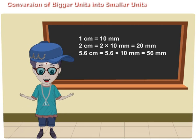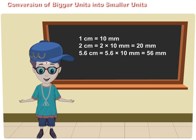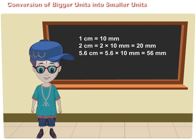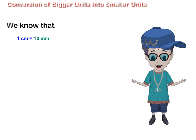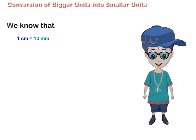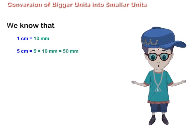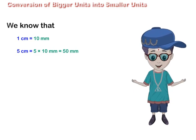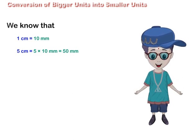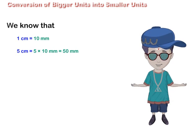Conversion of bigger units into smaller units. We know that 1 cm is equal to 10 mm. So, to convert 5 cm into millimeters, we multiply 5 by 10 and get 50 mm.